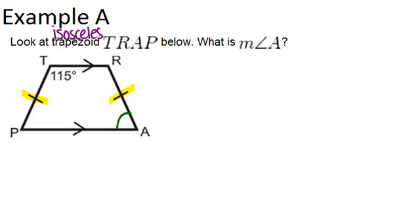That means each pair of base angles will be the same measure. So the 115 degree angle T will be congruent to angle R, so angle R is also 115 degrees, and angle A and angle P will also be congruent.